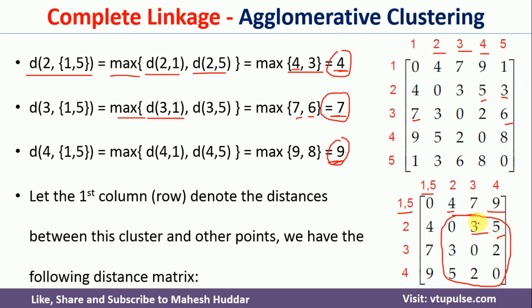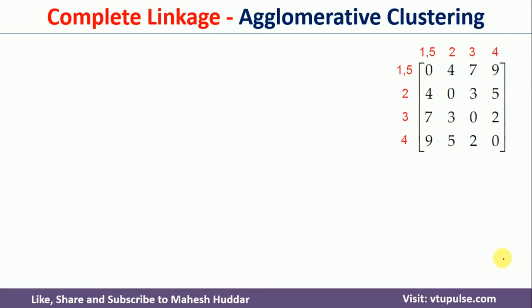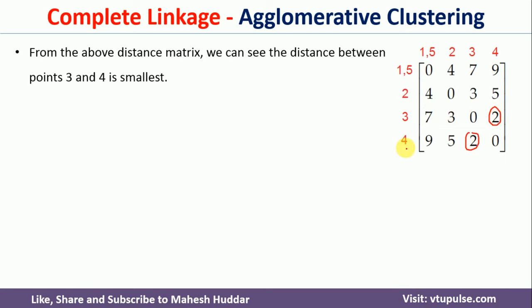Looking at this modified matrix, the minimum distance is 2, which is between points 3 and 4. So we club points 3 and 4 into one cluster. We are left with cluster {1,5}, point 2, and new cluster {3,4}. We now need to calculate the distance from {1,5} to {3,4} and from point 2 to {3,4}, since a new cluster has been formed.